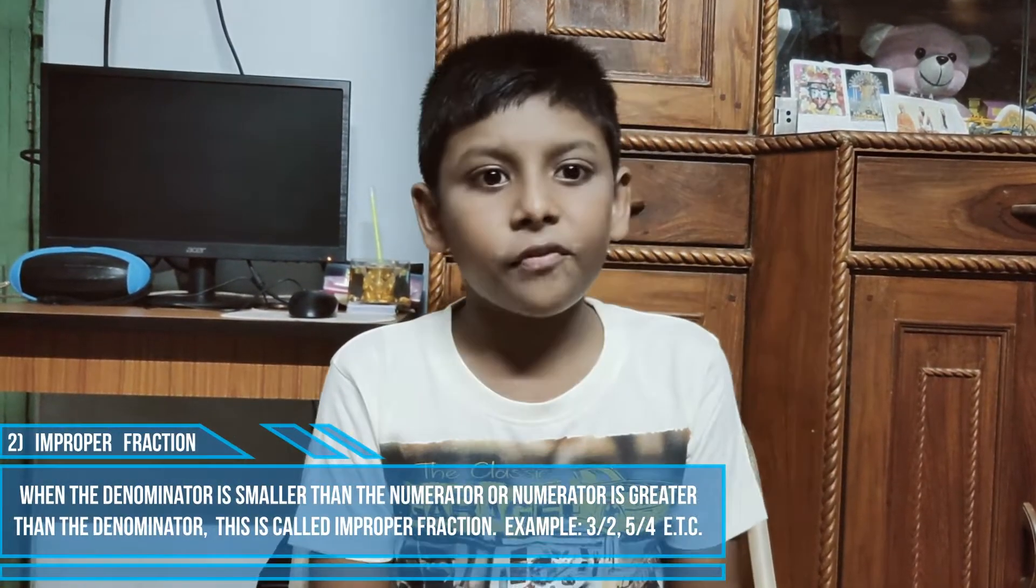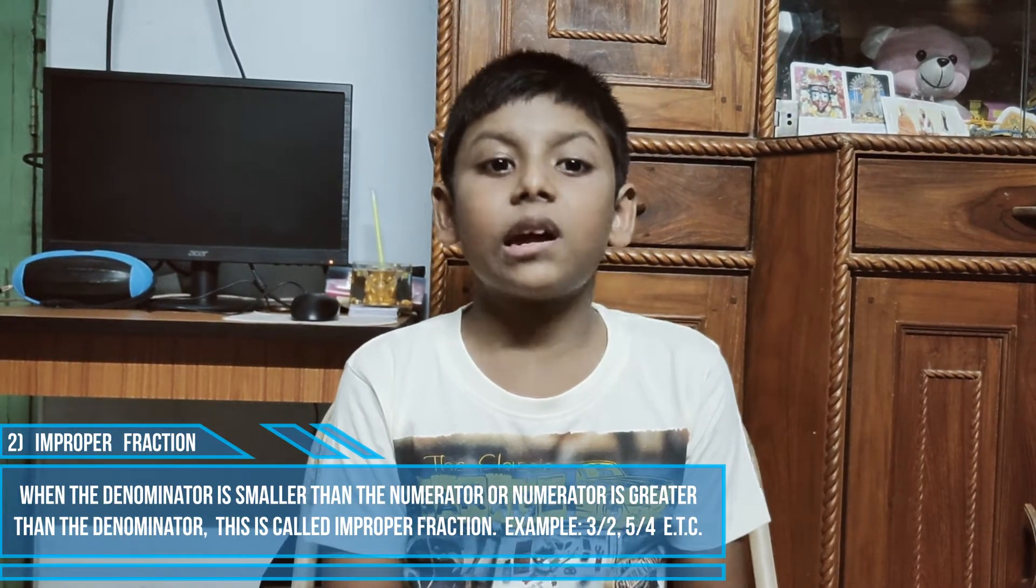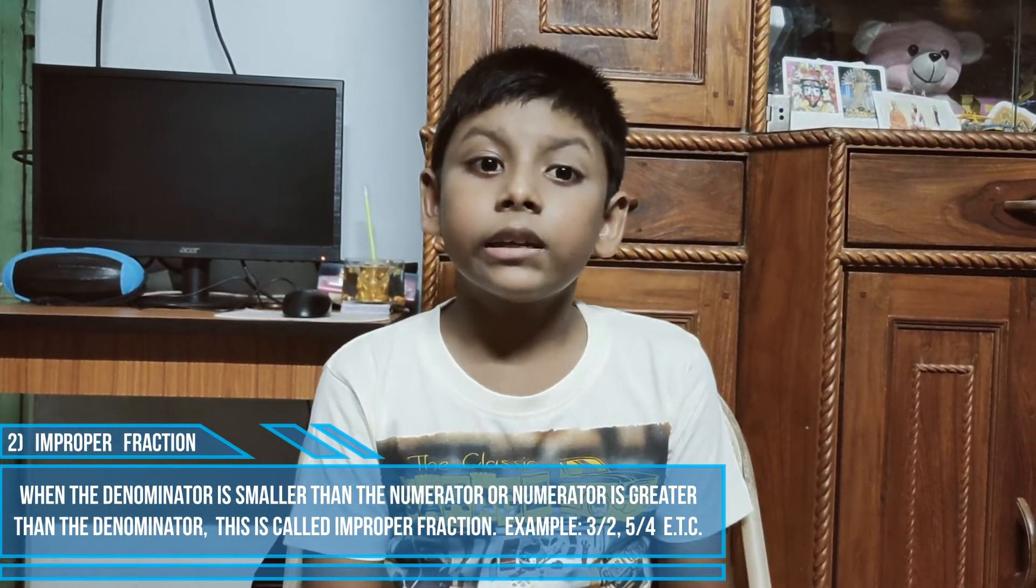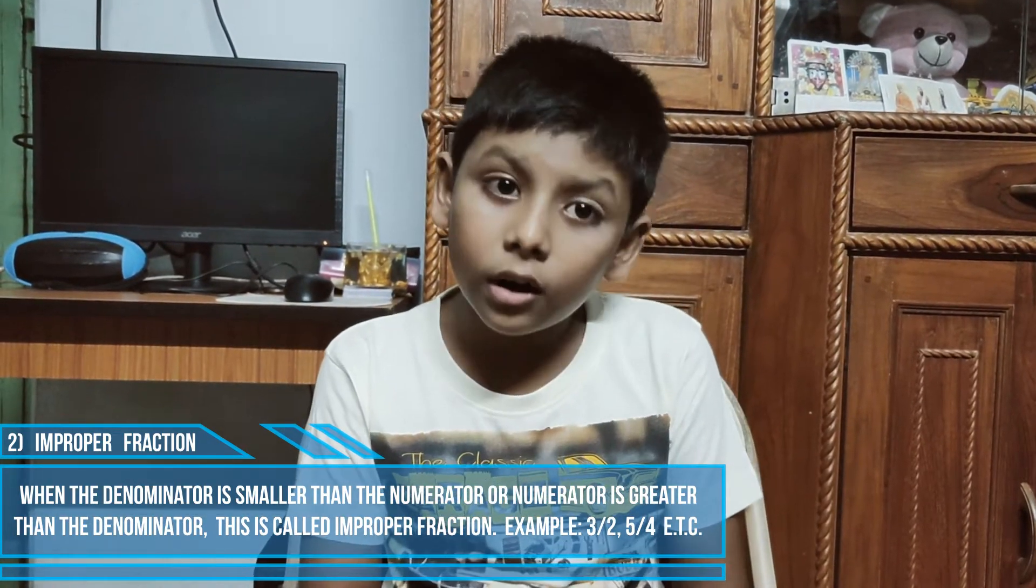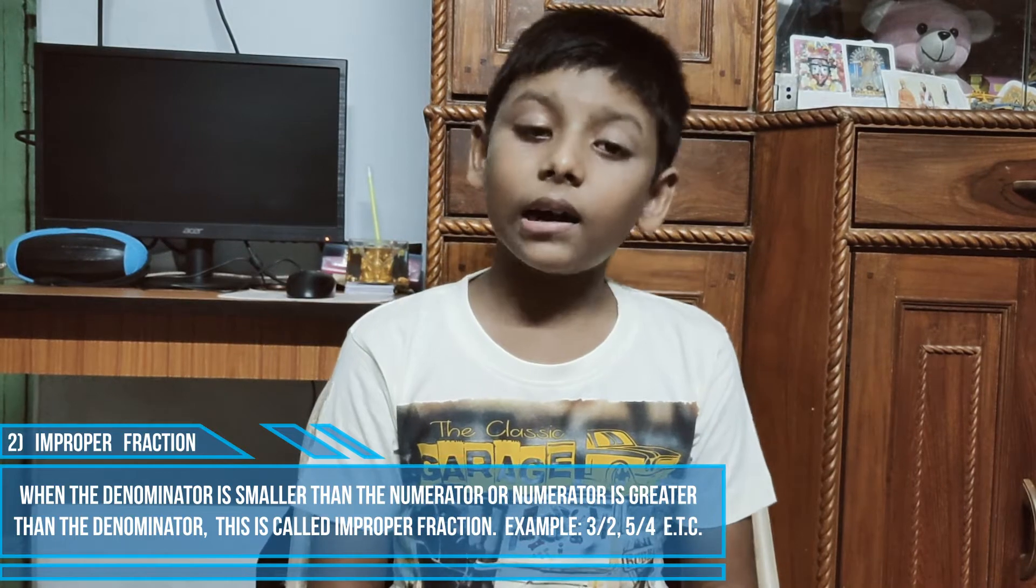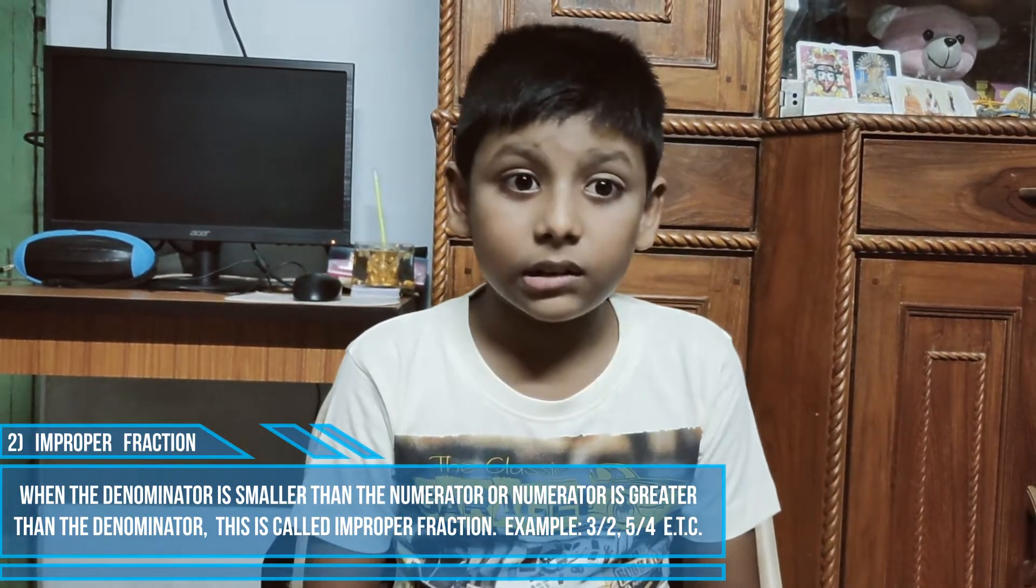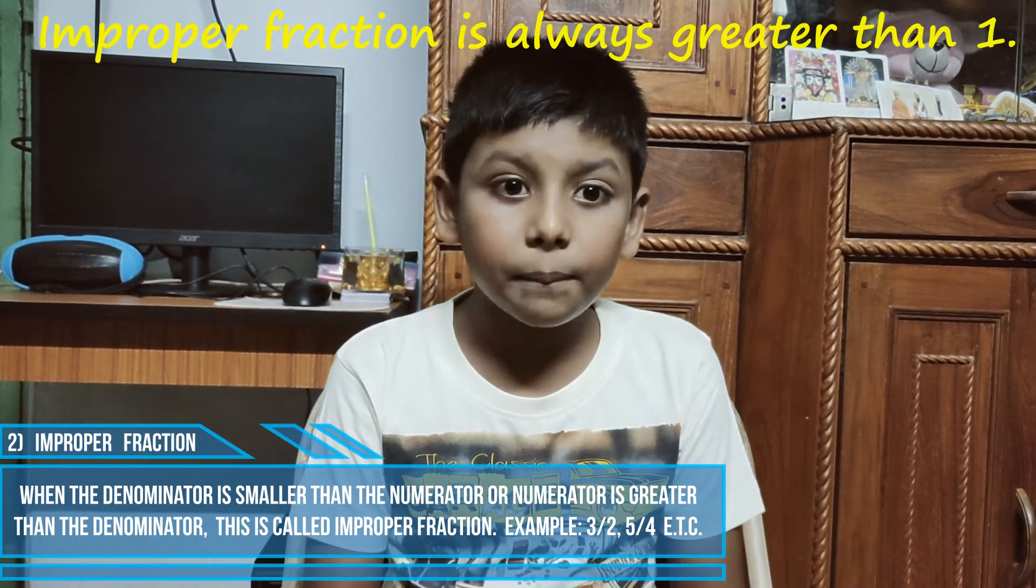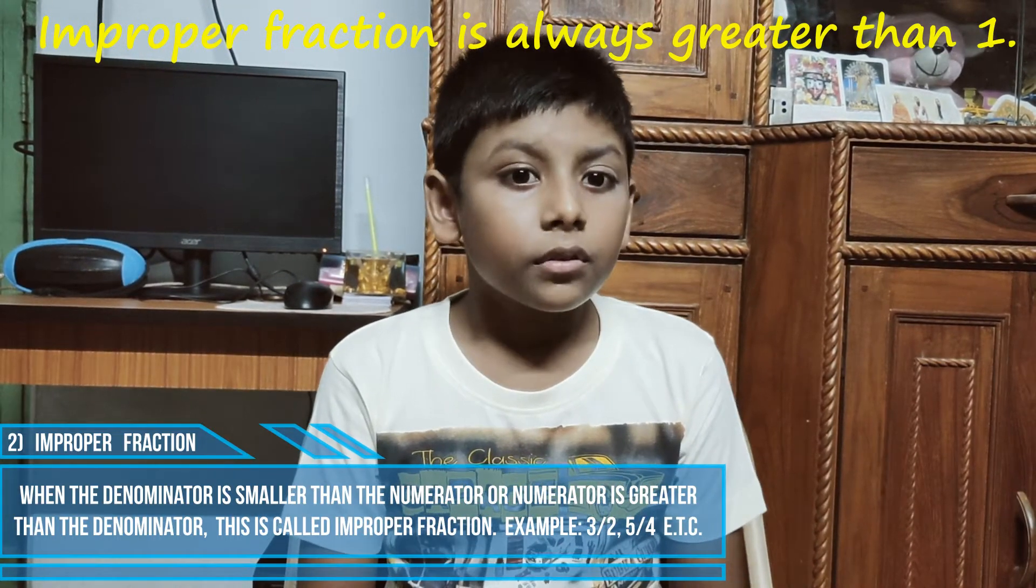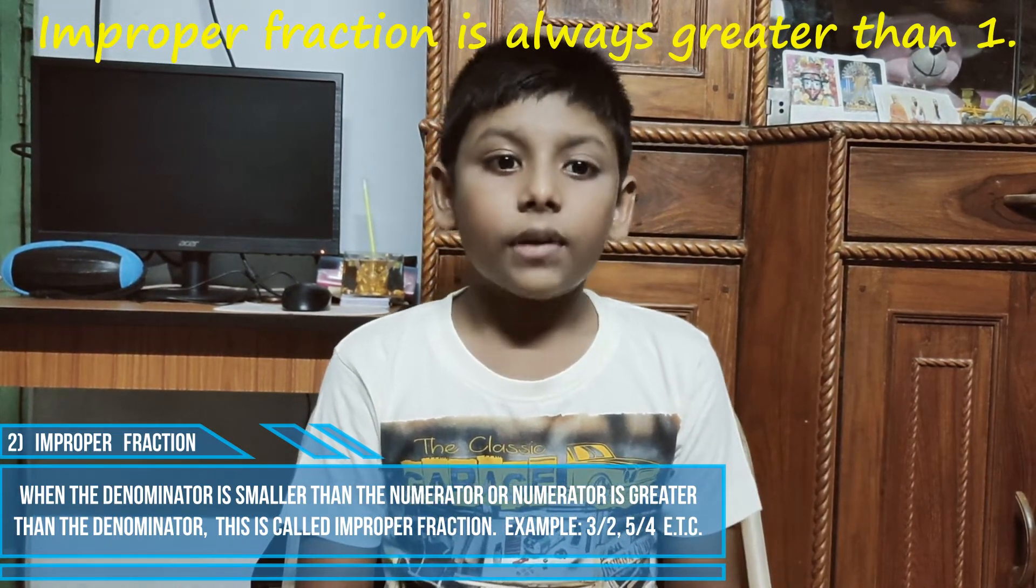2. Improper fractions. Improper fractions are fractions in which denominators are smaller than numerators or numerators are bigger than the denominators. This is called improper fractions. Example 3 by 2 and 5 by 4.